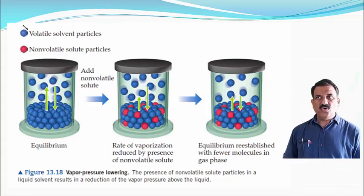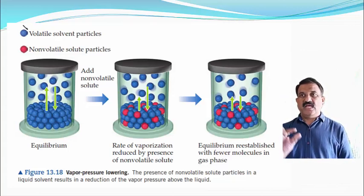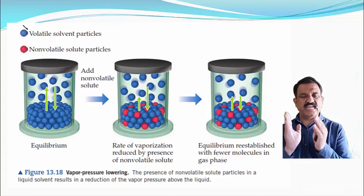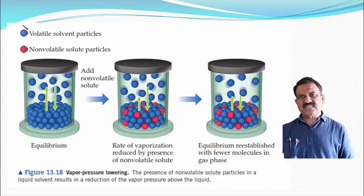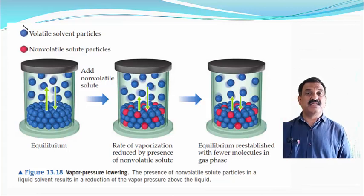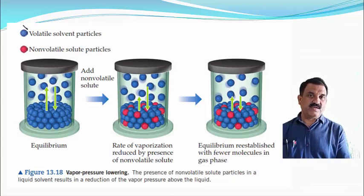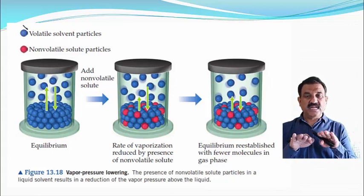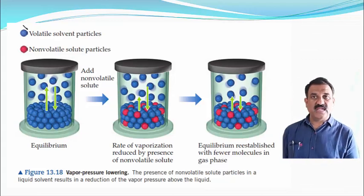In the second diagram, a few non-volatile solute particles, shown by red spheres, are added to the solution. At the surface of the liquid, some non-volatile solutes are present. These non-volatile solute particles do not go into the gaseous state. At equilibrium, there are fewer molecules in the gaseous state, and hence the vapour pressure of a solution containing a non-volatile solute is lower than that of the pure solvent.